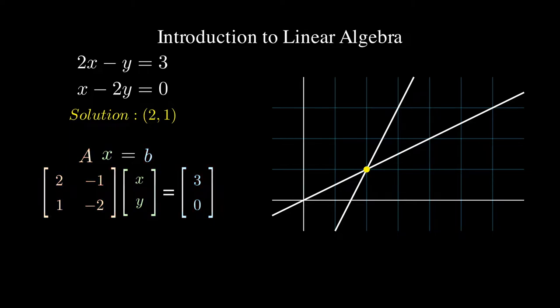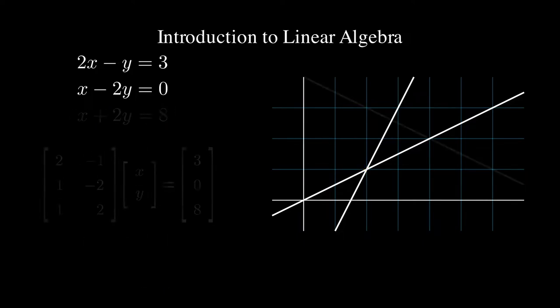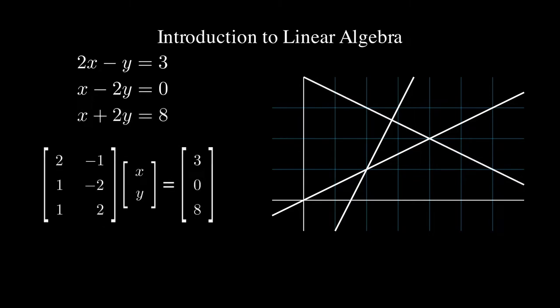The solution to a matrix equation is a vector, specifically a vector where each value corresponds to a variable from the system. It gets a little more complicated when we add a line that doesn't pass through that intersection. We still have a system of equations, but now we don't have a solution to this system. We can, however, approximate a solution somewhere in the middle of these three lines.